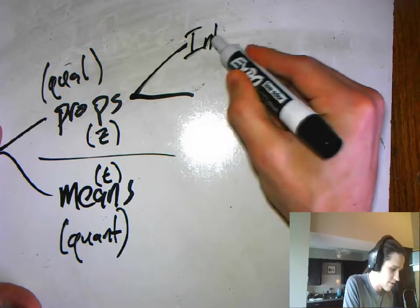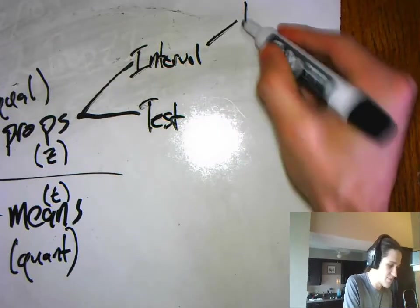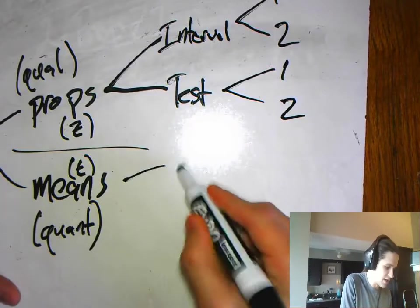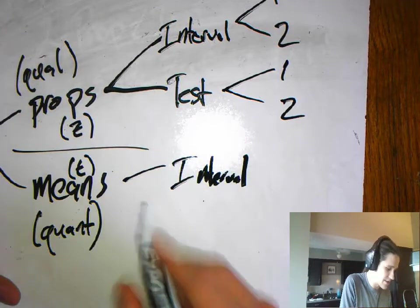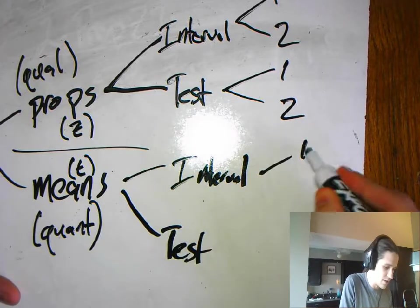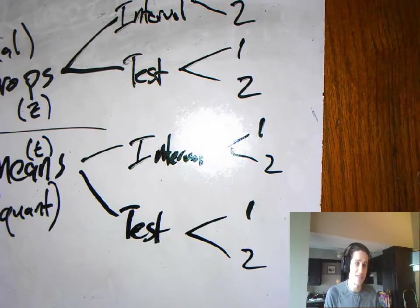It'll be proportions or means. And most of the time with proportions, that means it's going to be Z stuff. And most of the times with means, that means it's going to be T stuff. And think about what we're going to have to do after we've made our first decision about what kind of data we've got. We're going to have to say, is it a test or an interval?